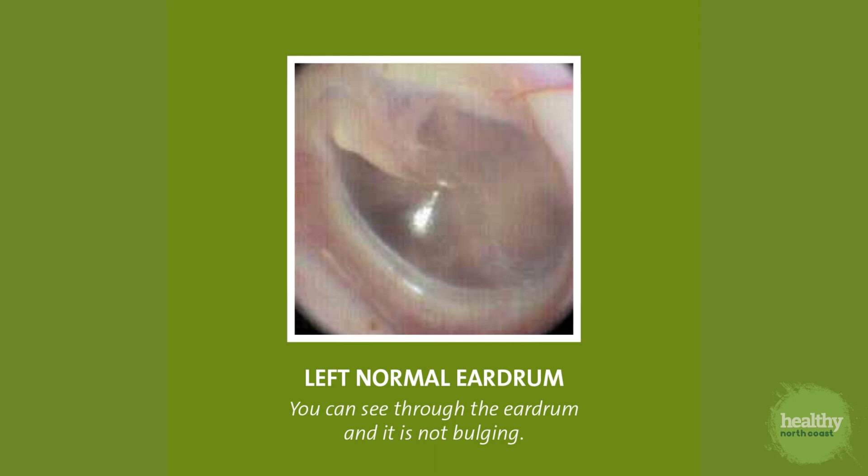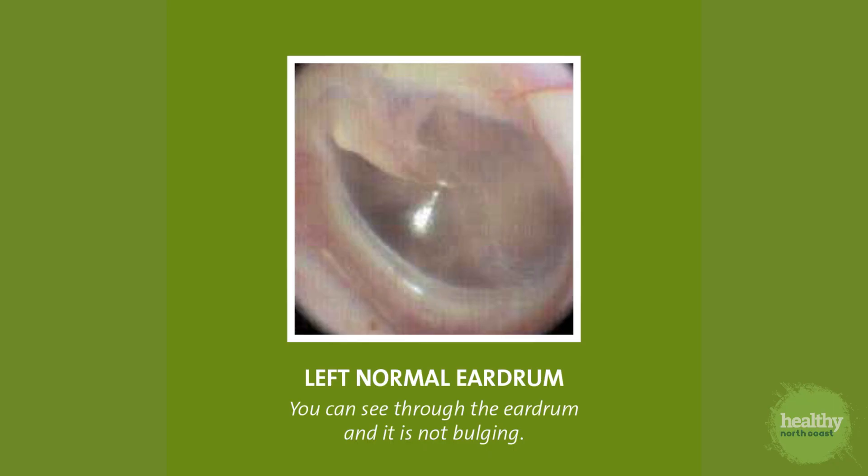The handle of the malleolus points to the front of the ear and towards the top of the head. When describing an abnormality, it's useful to imagine a clock face superimposed over the drum. For example, you can say there's a small one-millimeter perforation in the left eardrum at five o'clock.